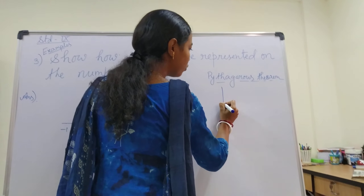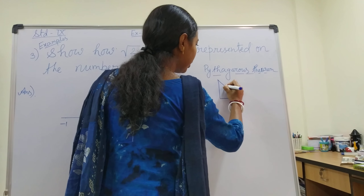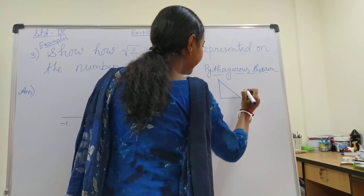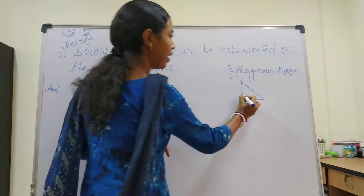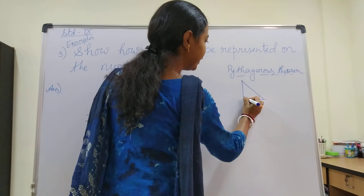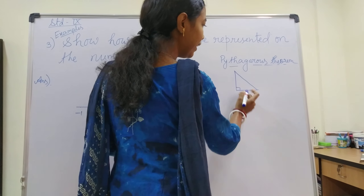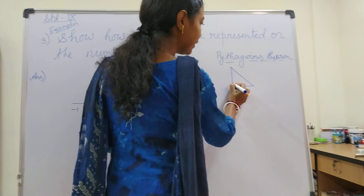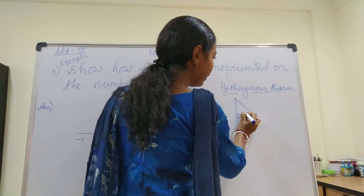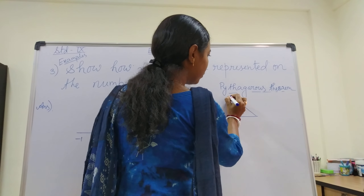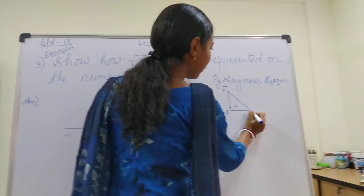So first, draw one right angle triangle. A right angle triangle means a triangle having one angle equal to 90 degrees. Give its vertices the names P, Q, R.